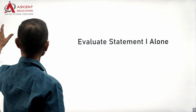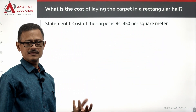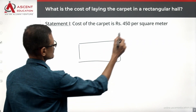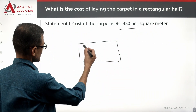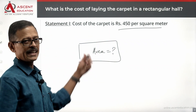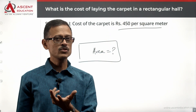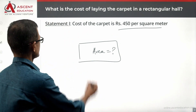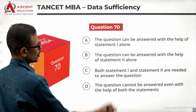Looking at Statement 1 alone: the cost of the carpet is 450 rupees per square meter. However, we have no information about the area of the rectangular hall. If the area is 10 square meters, the cost would be 4,500 rupees; if it is 100 square meters, the cost would be 45,000 rupees. So Statement 1 alone is not sufficient — it gives useful information but not everything required.